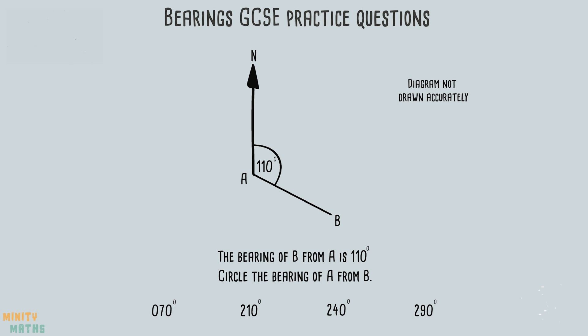Firstly we are given the angle of B from A but we need to find the reverse of this to answer the question. We want to find the angle from B so we need to draw a line towards north from B. We are shown where north is in the diagram.